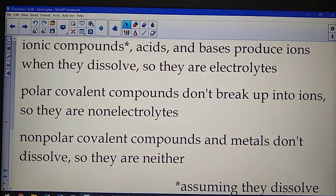Ionic compounds, assuming they dissolve, acids and bases would produce ions. Polar covalent compounds, on the other hand, don't have a charge. They don't break up into ions, so they will dissolve, but they won't conduct, and they must be non-electrolytes.